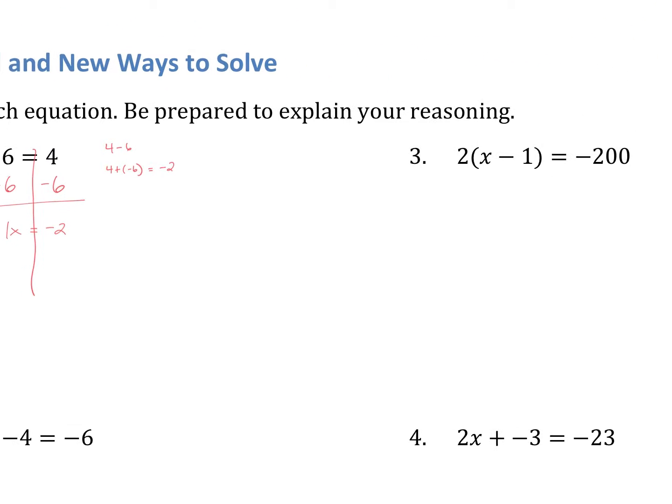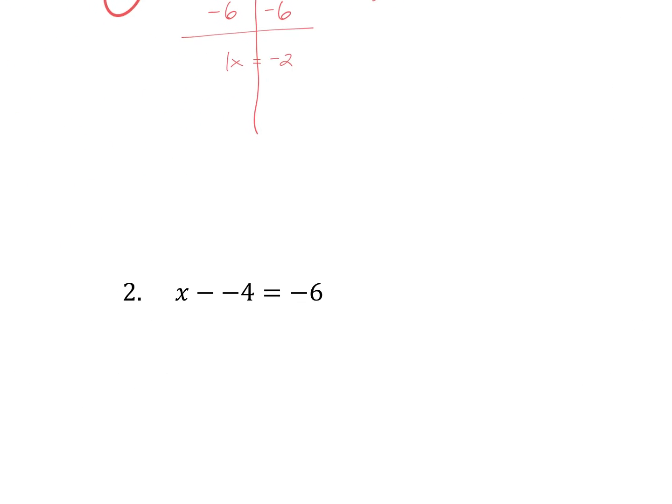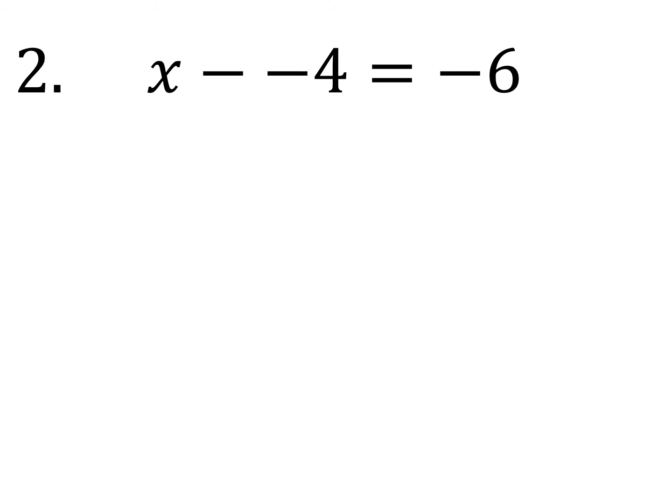Let's look at number 2. We have X minus negative 4 equals negative 6. We've worked in the past with negative numbers and subtraction, and we always said change all subtraction to addition. So we're going to rewrite this as an addition problem. You may have guessed, but our addition problem would be X plus 4 equals negative 6. Go ahead, pause the video, and finish the problem from here, showing your balance moves.